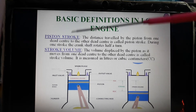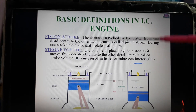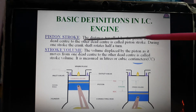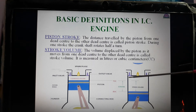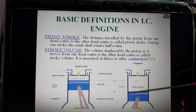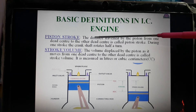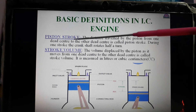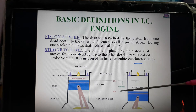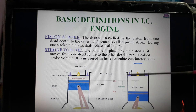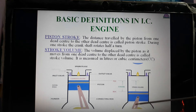The next definition is piston stroke. The distance traveled by the piston from one dead center to another dead center — that is, from bottom dead center to top dead center — is called piston stroke. During one stroke, the crank turns half a revolution. When the piston moves from one dead center to another, the crank completes half a revolution.